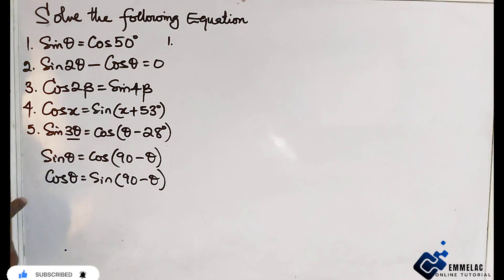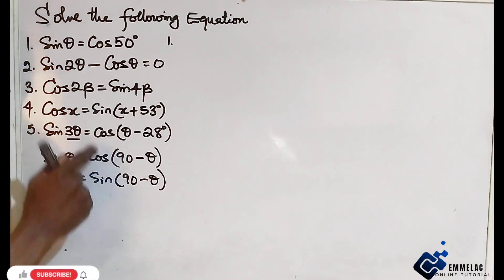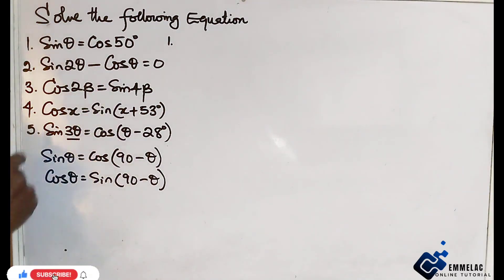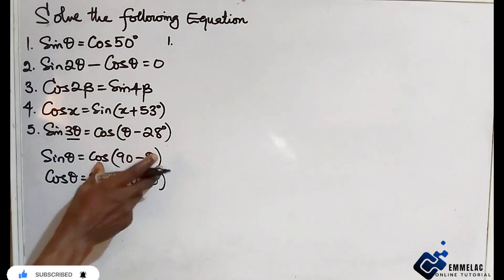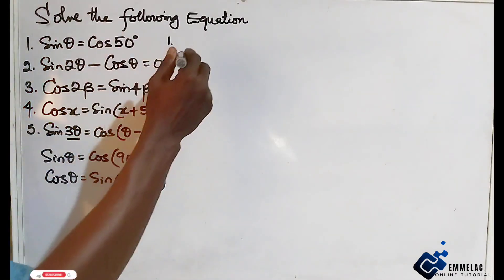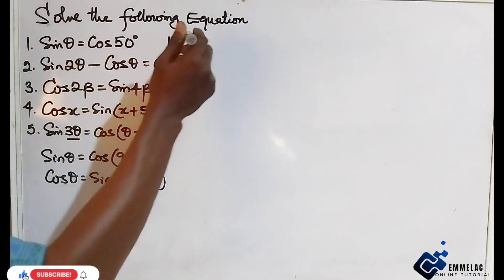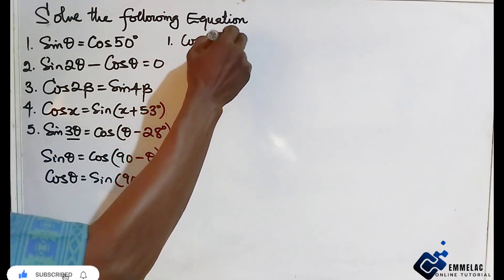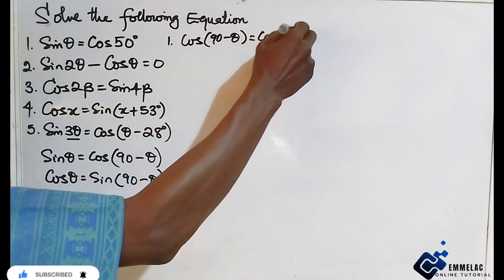What we need to do is equate either of these. We choose sine theta here. So sine theta equals cos of 90 minus theta. We now equate this to cos 50, so cos of 90 minus theta equals cos 50.